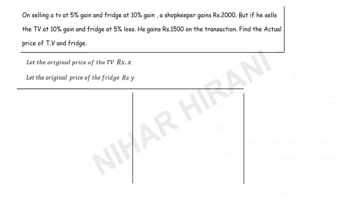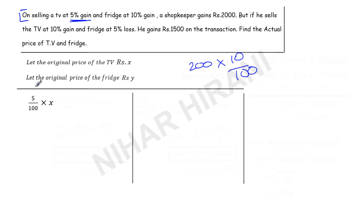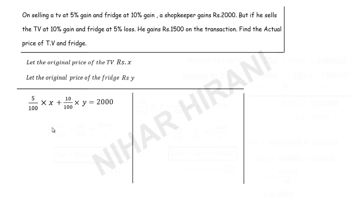Now let's deal with the first statement: 5% gain on TV, 10% gain on fridge, and total gain Rs. 2000. So 5% of x is 5 over 100 times x. And 10% of y is 10 over 100 times y. So we get: 5x upon 100 plus 10y upon 100 equals 2000.